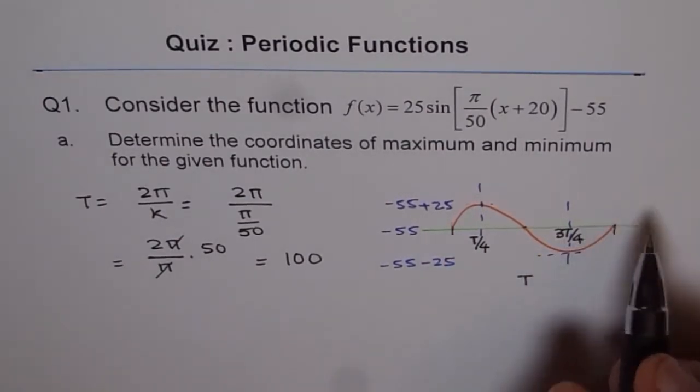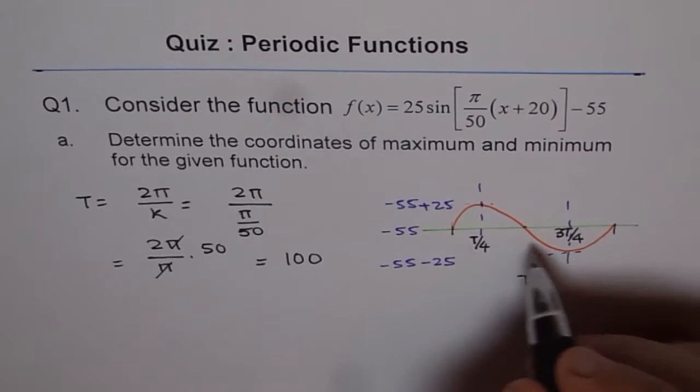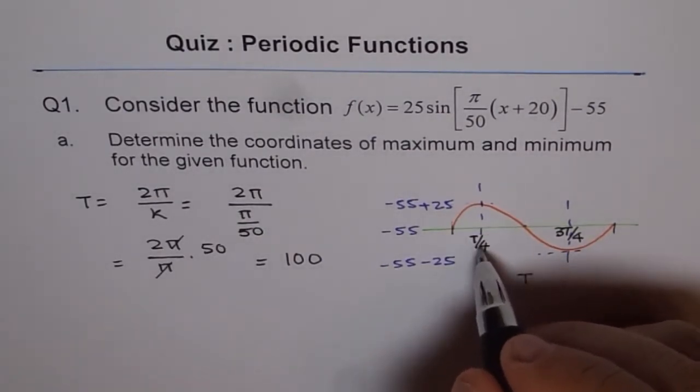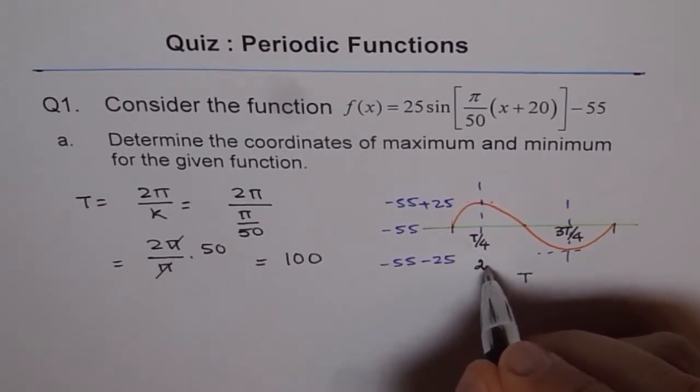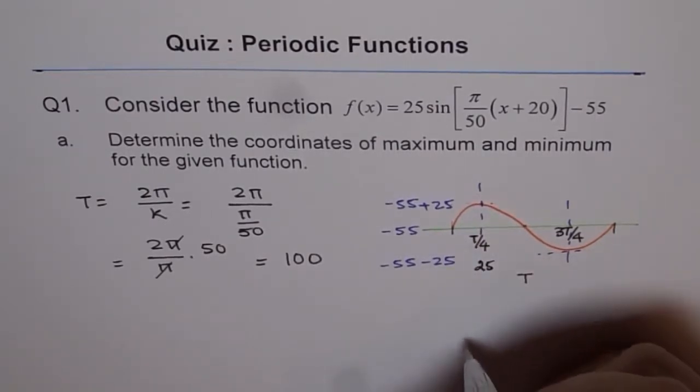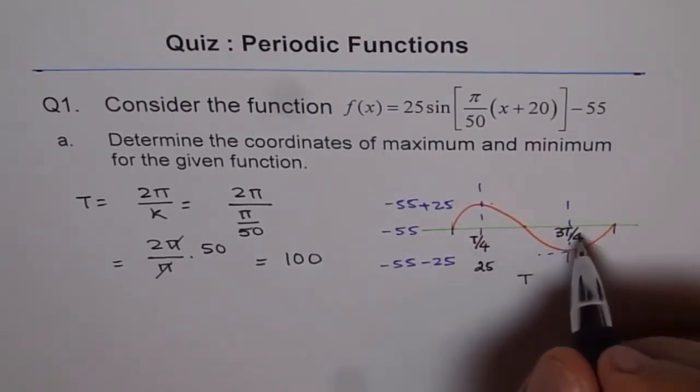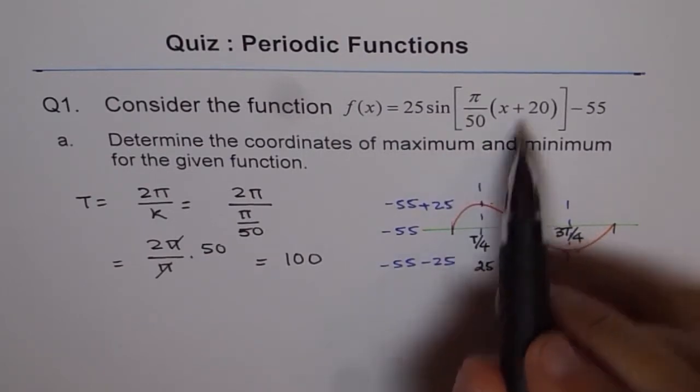Now, in normal condition, if this is 100, then T over 4 will be 4th part. I should say T over 4 will be at 25. This is at 25. So that is without this translation.